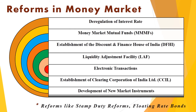The second reform is money market mutual funds. In order to provide additional short-term investment avenues, RBI encouraged the establishment of money market mutual funds in 1992. These funds are allowed to sell units to corporates and individuals. Financial institutions such as IDBI and UTI have set up such funds. The third reform is the establishment of the Discount and Finance House of India, set up in 1988 jointly by the RBI, public sector banks and financial institutions, to impart liquidity in the money market.